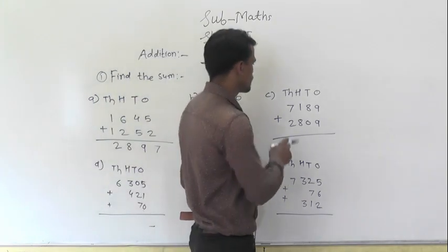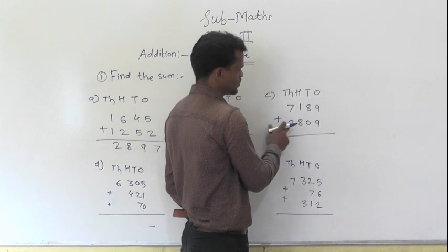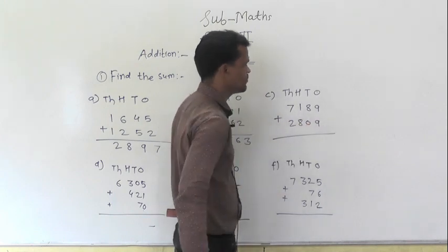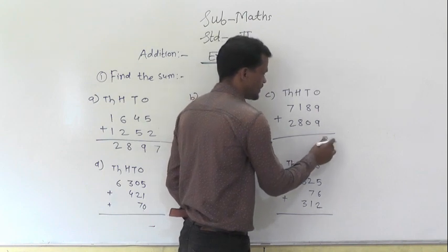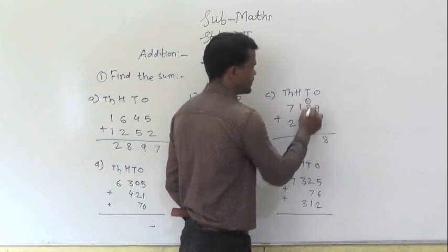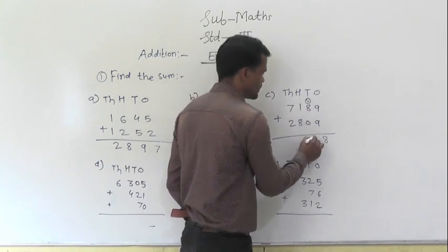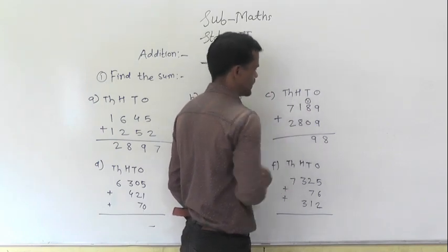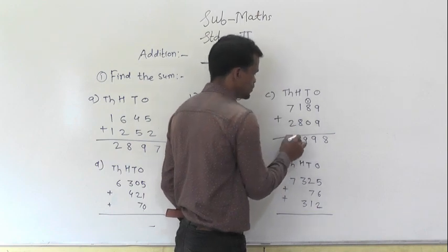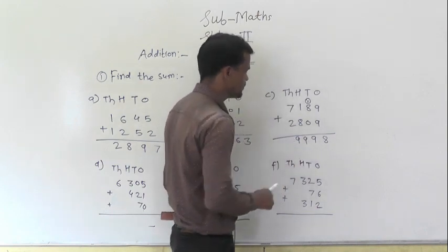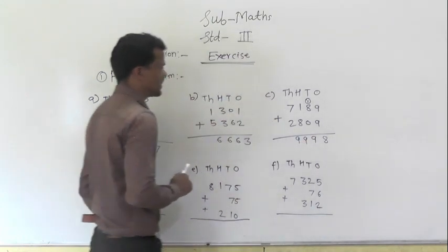Next one: 7189 plus 2809. Add the columns. 9 plus 9 is 18, write 8 here and 1 carry to the tens place. 8 plus 0 is 8, plus 1 carry is 9. 1 plus 8 is 9. 7 plus 2 is 9. So the answer is 9998.